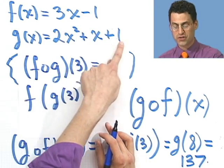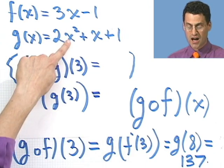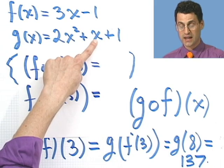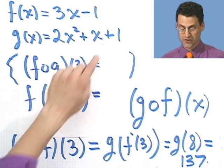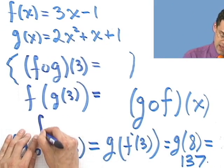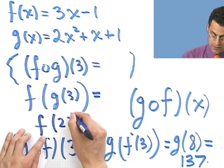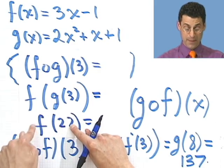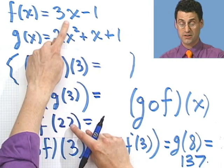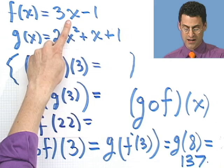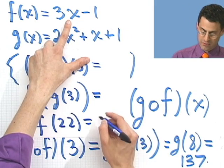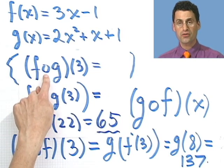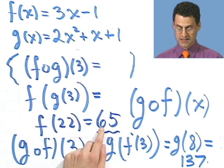So what's g of 3? Well, if I put in 3 for g, what do I see? I'll see a 9 times 2. That's 18. 18 plus 3 is what? 18, 19, 20, 21. And 1 is 22. So this is going to be f of 22. So that answer is 22. Now I take that answer and I put it into the f function. So I put 22 in for x, which would be what? 66 minus 1, which is 65.